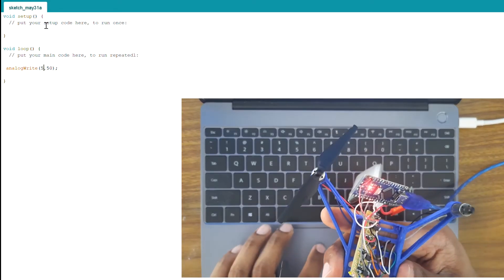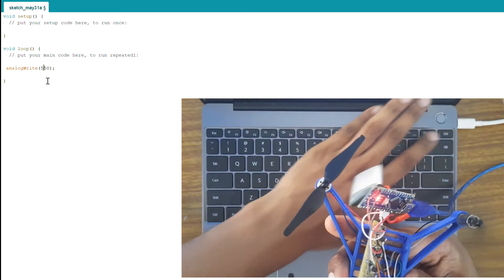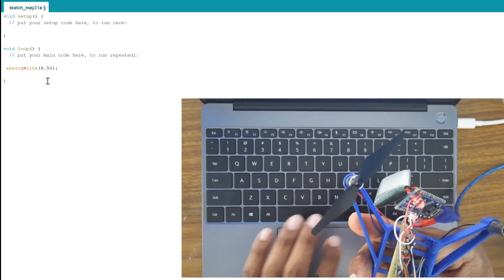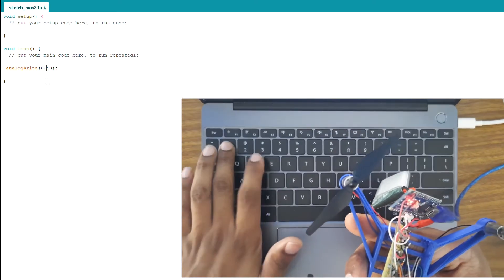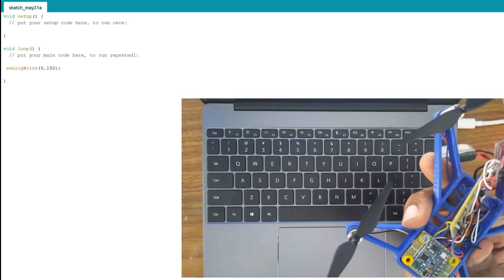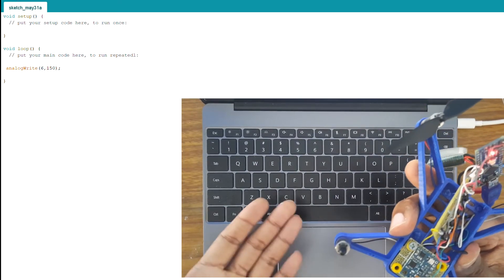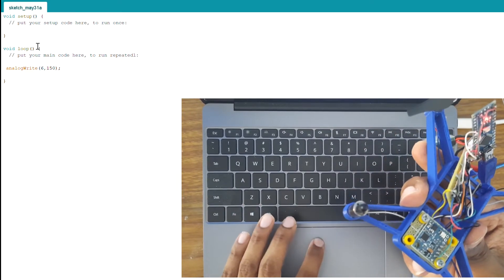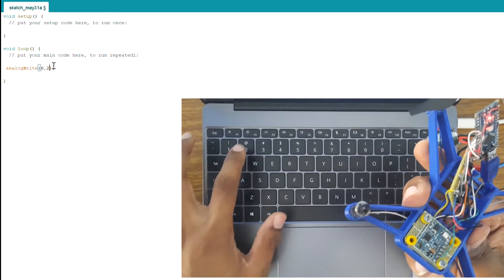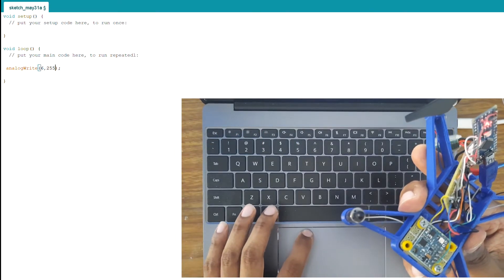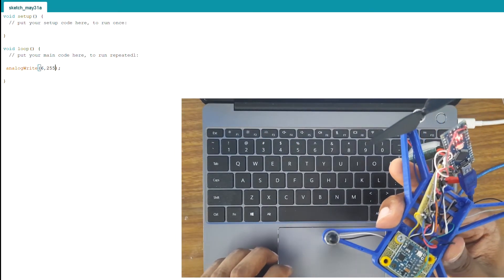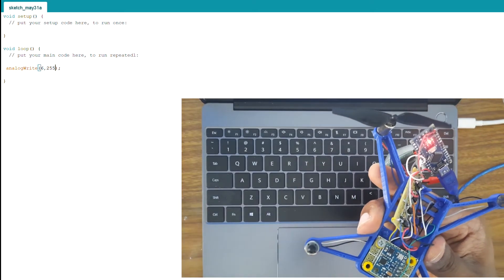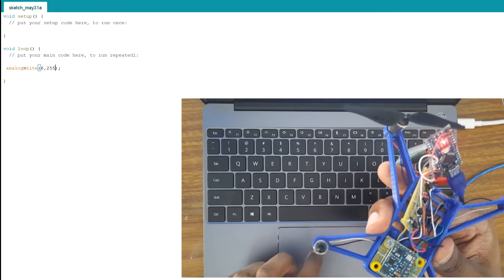If you want to increase the speed, let's just change this to pin 6 and the value to 150. You see the speed has increased. You can increase it to 255 which is the maximum PWM value. So the speed is even higher now. Our speed controller is working.